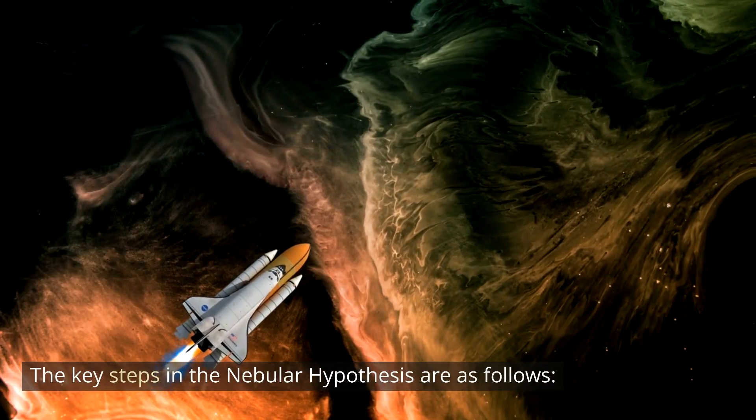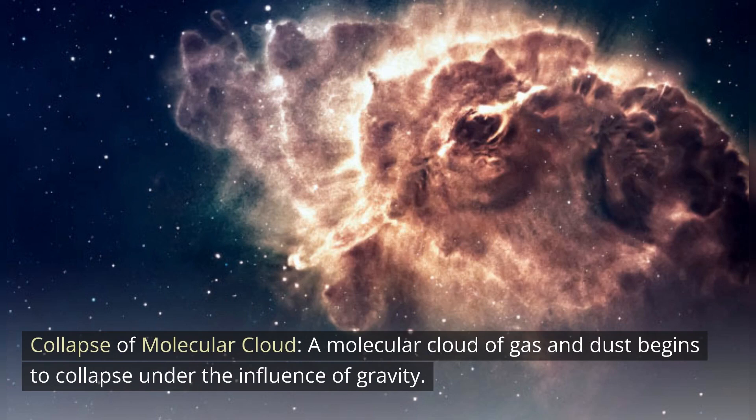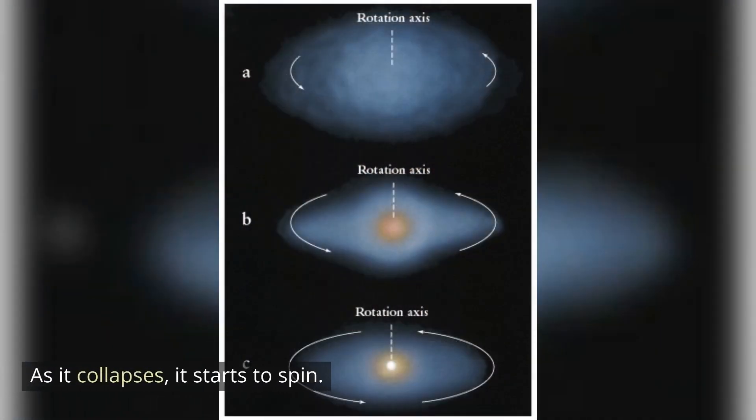The key steps in the nebular hypothesis are as follows. Collapse of molecular cloud: A molecular cloud of gas and dust begins to collapse under the influence of gravity. As it collapses, it starts to spin.